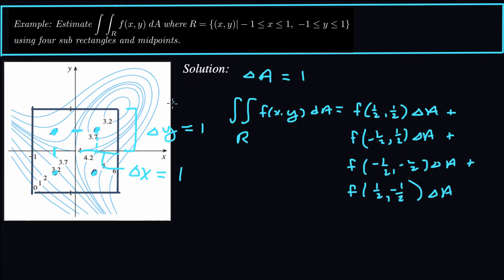Now, what are the function values? We don't have an explicit f(x,y) — all we have are the contour lines. The function value at the first midpoint seems to be somewhere between 3.7 and 3.2, so we'll say about 3.6. The value at the next midpoint looks like about 4.2 on that contour. Then following the contour around it's 5, so somewhere between 4.2 and 5 — we'll estimate that as about 4.6. The third midpoint looks pretty close to 3.2, so we'll go with 3.1.